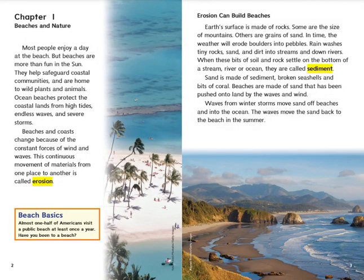Most people enjoy a day at the beach, but beaches are more than fun in the sun. They help safeguard coastal communities and are home to wild plants and animals. Ocean beaches protect the coastal lands from high tides, endless waves, and severe storms. Beaches and coasts change because of the constant forces of wind and waves. This continuous movement of materials from one place to another is called erosion.